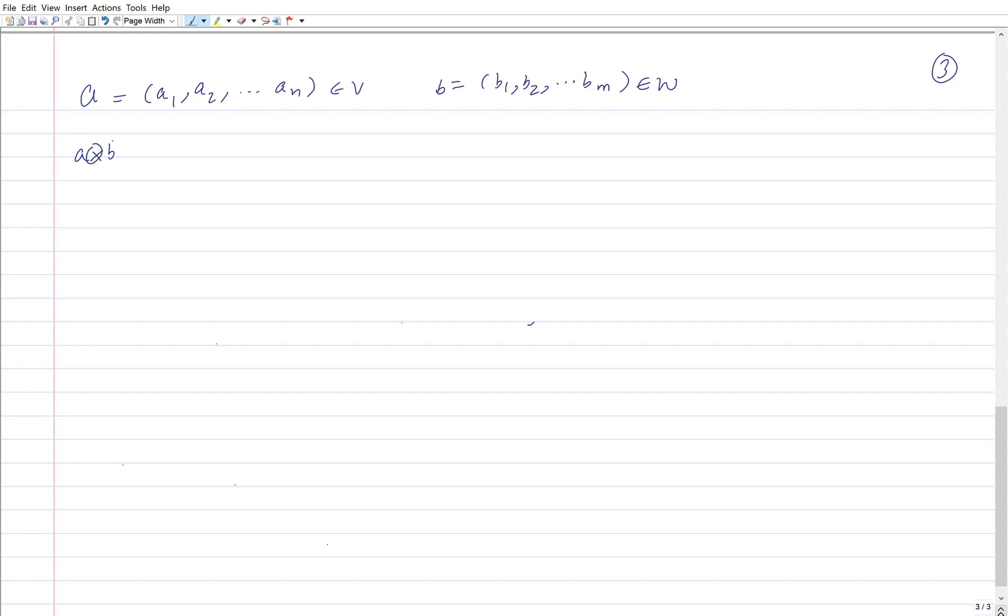A tensor B is an element of the tensor product vector space and I can represent it by another column vector. For example, let's say I have two vectors and that would be represented by a column vector with a dimension of 4. This is going to be an N into M dimensional column vector.